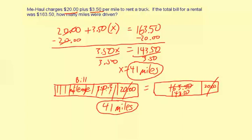I hope you can see the connection between the way this equation is set up and the way the visual model is set up — it's really the same thought process. One is more concrete, which is the visual model, and one is more abstract, which is the algebra model. You can use either technique to solve this type of problem.